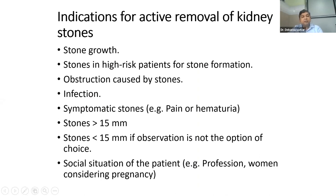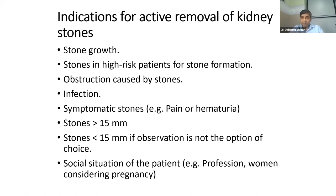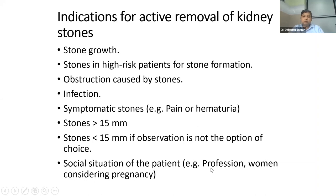For kidney stones, who needs early treatment? Stones more than 15 mm — no question, remove them. If a patient has a smaller stone of 10 mm, declines surgery, but on follow-up the stone is growing, that is a high-risk patient. If there is obstruction caused by the stone with hydronephrosis, if there is even a single episode of infection with a renal stone, if the patient is symptomatic, or in special situations such as a pilot with a 5 mm renal stone, surgery is indicated. In a woman considering pregnancy, always remove the stone before pregnancy regardless of size.